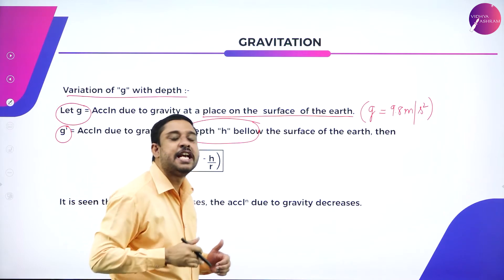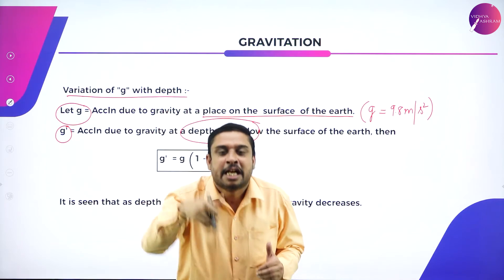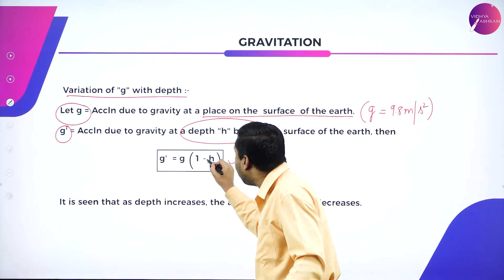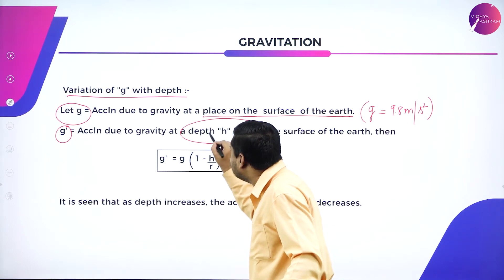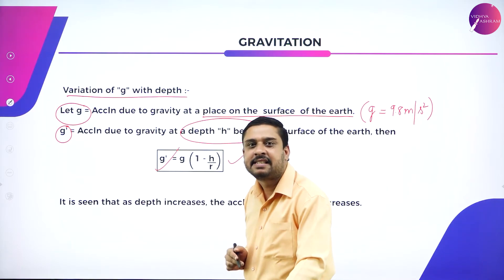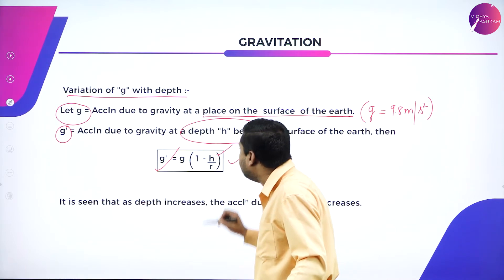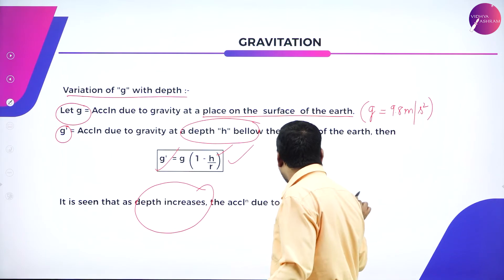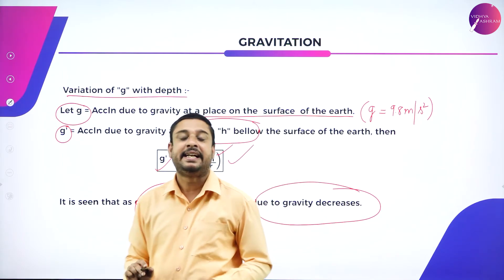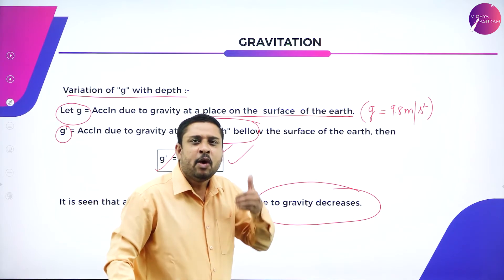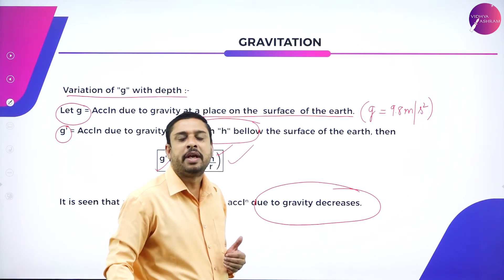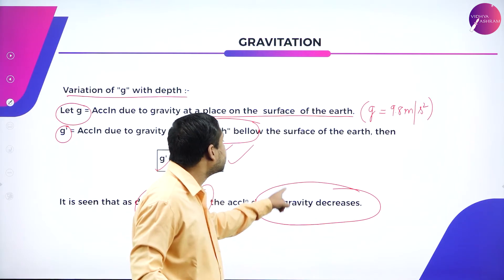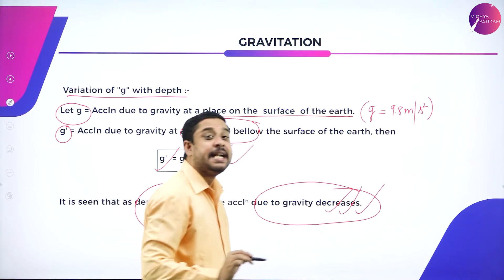Below the surface of the earth, at a depth h inside the core of the earth, g' is equal to g × (1 − h/R). This is the expression defining acceleration due to gravity at a depth h. Again, the consequence: as depth increases, acceleration due to gravity decreases. So whether with increase in height or increase in depth inside the core, acceleration due to gravity always decreases.